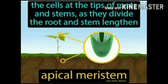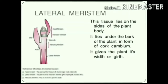Apical meristem consists of undifferentiated cells at the tip of the root and stem. They divide so that the root and stem lengthen. Apical meristems are found in the root and shoot tips.